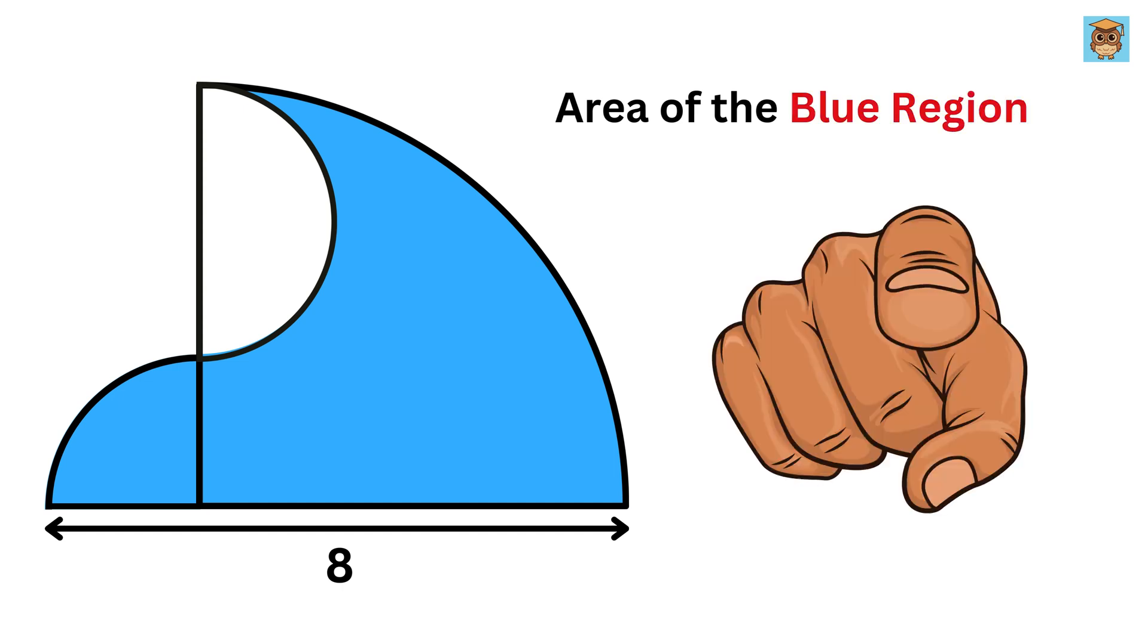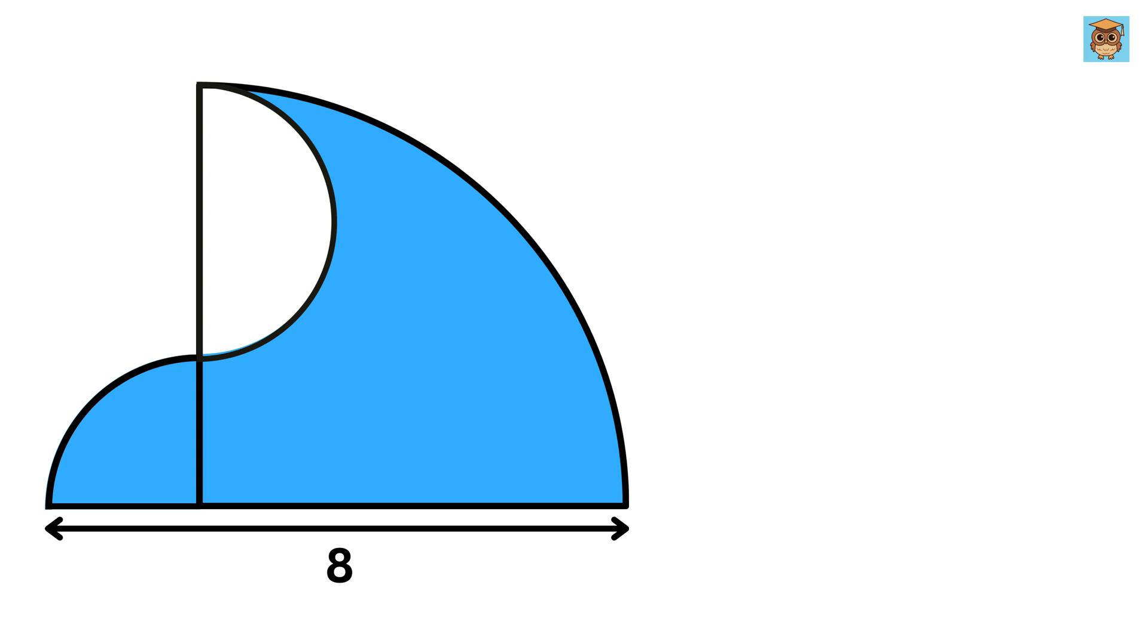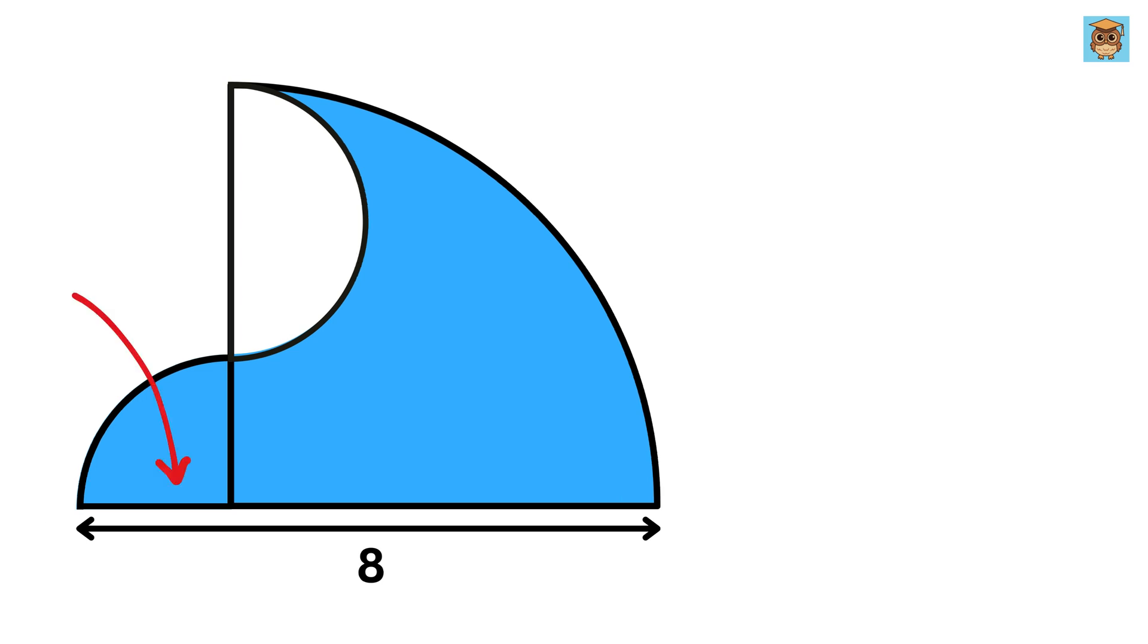So, can you solve it? Okay, as a first step, let us label the radius of this small quarter circle as r. So this will also be r.